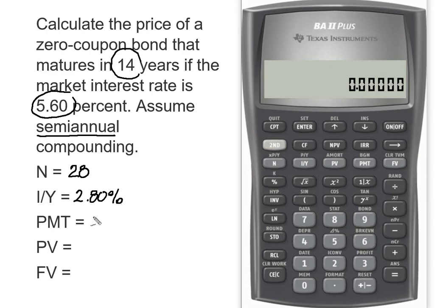In bond calculations, we don't have payments, but we have a future value which is a negative $1,000, which is the face amount of the bond. What we're going to calculate is the present value, or the price that that zero-coupon bond will sell for today.